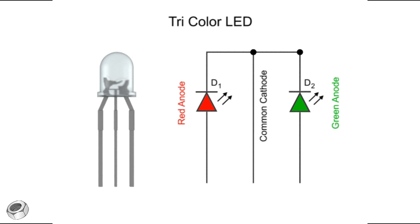When the wire connected to the green anode gets a positive voltage, the light turns green. When the wire connected to the red anode gets a positive voltage, the light turns red.